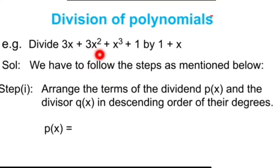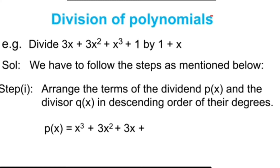First, take the terms from the dividend. What is the highest degree term from this dividend? It is x cubed. What is the next term? It is 3x squared. Next, 3x. Next, the constant term, that is 1. Now the terms of the dividend are in descending order. Next, let us arrange the terms of the divisor also in descending order, so that the highest degree term from the divisor is x, and the next term is the constant. Now the terms of the divisor are also in descending order as per the degrees.